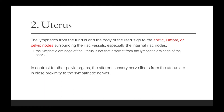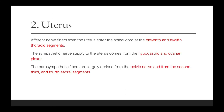The lymphatic drainage of the uterus is not that different from the lymphatic drainage of the cervix. In contrast to the other pelvic organs, the afferent sensory nerve fibers from the uterus are in close proximity to the sympathetic nerves. Afferent nerve fibers from the uterus enter the spinal cord at the 11th and 12th thoracic segments. The sympathetic nerve supply comes from the hypogastric and ovarian plexus. The parasympathetic fibers are largely derived from the pelvic nerve and from the 2nd, 3rd, and 4th sacral segments.